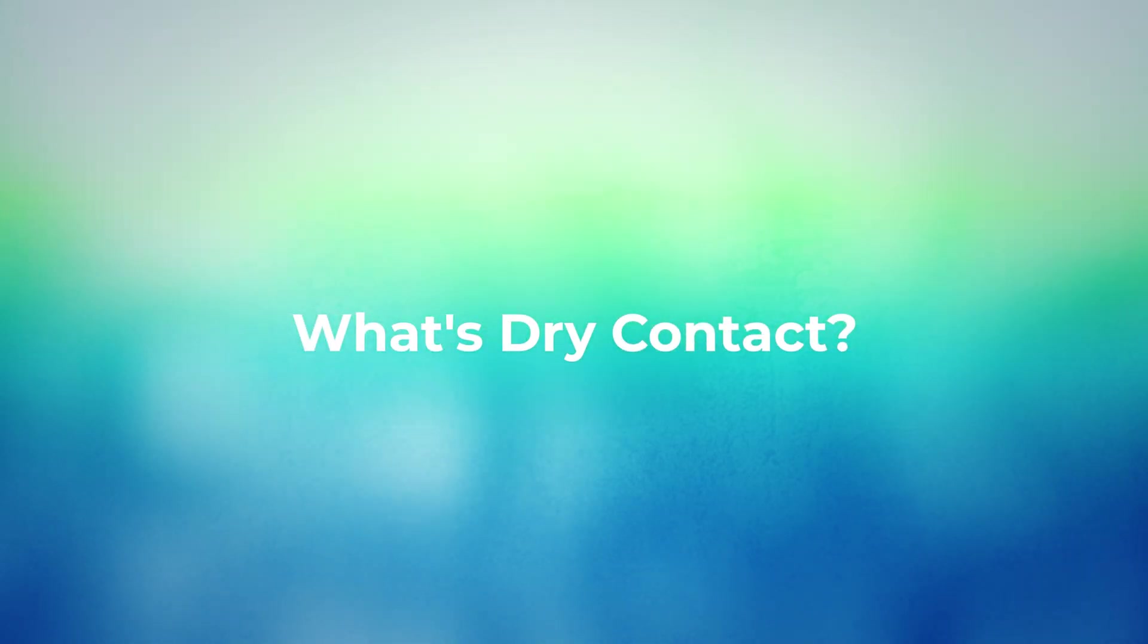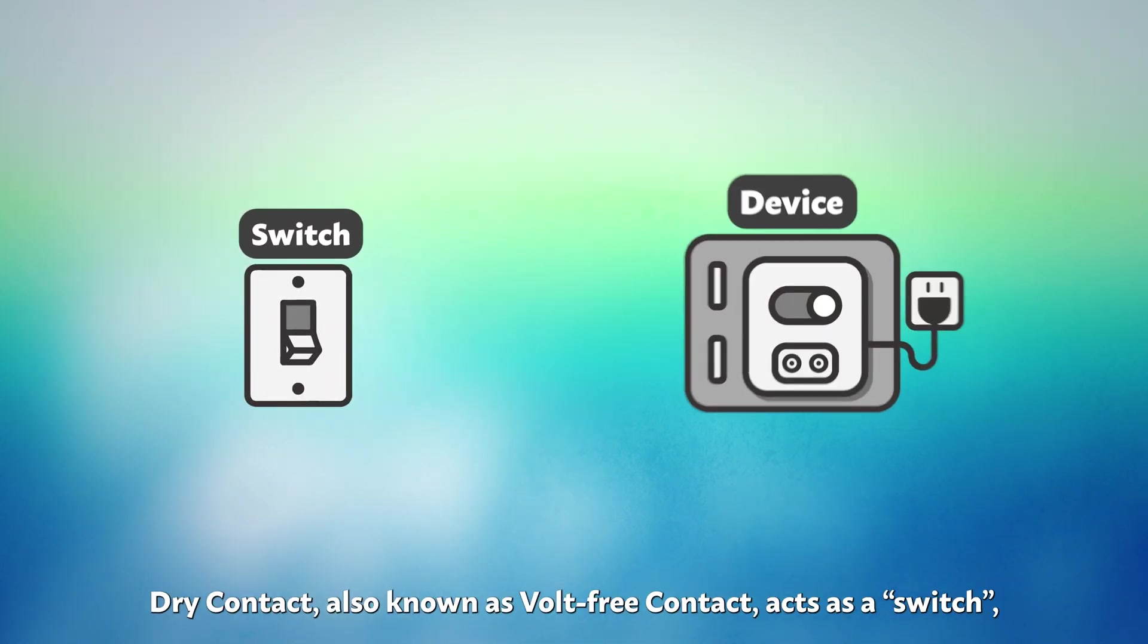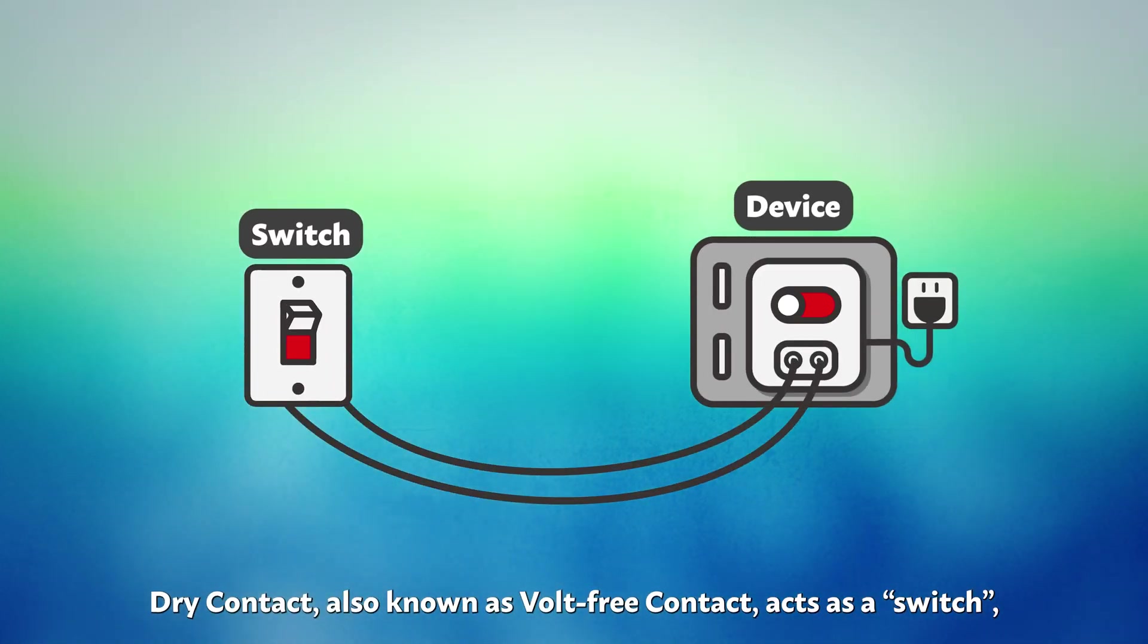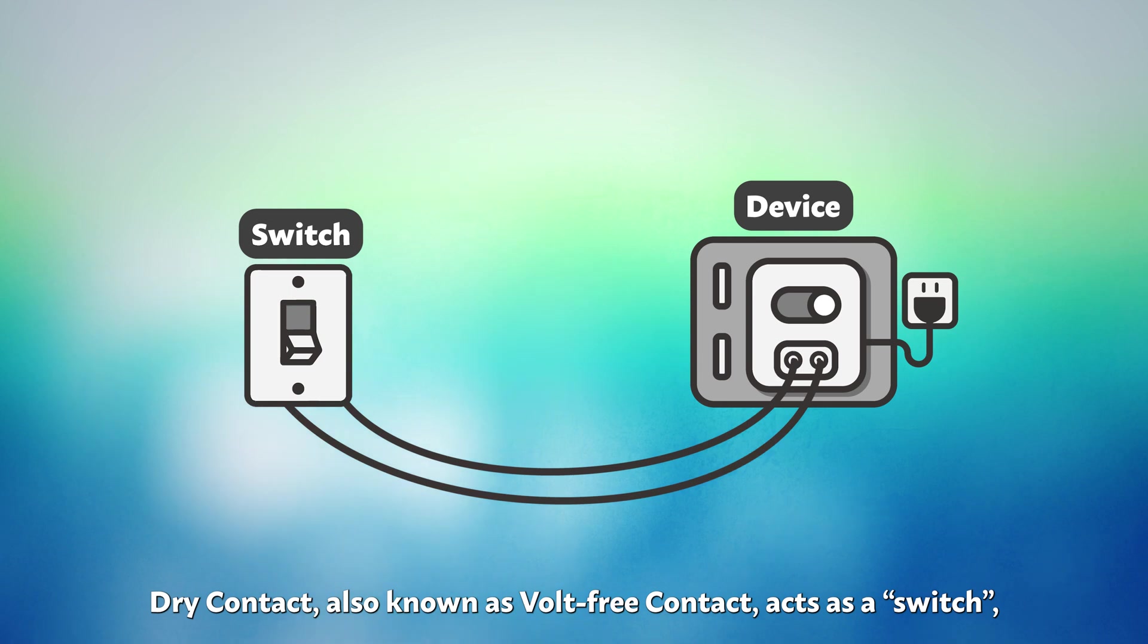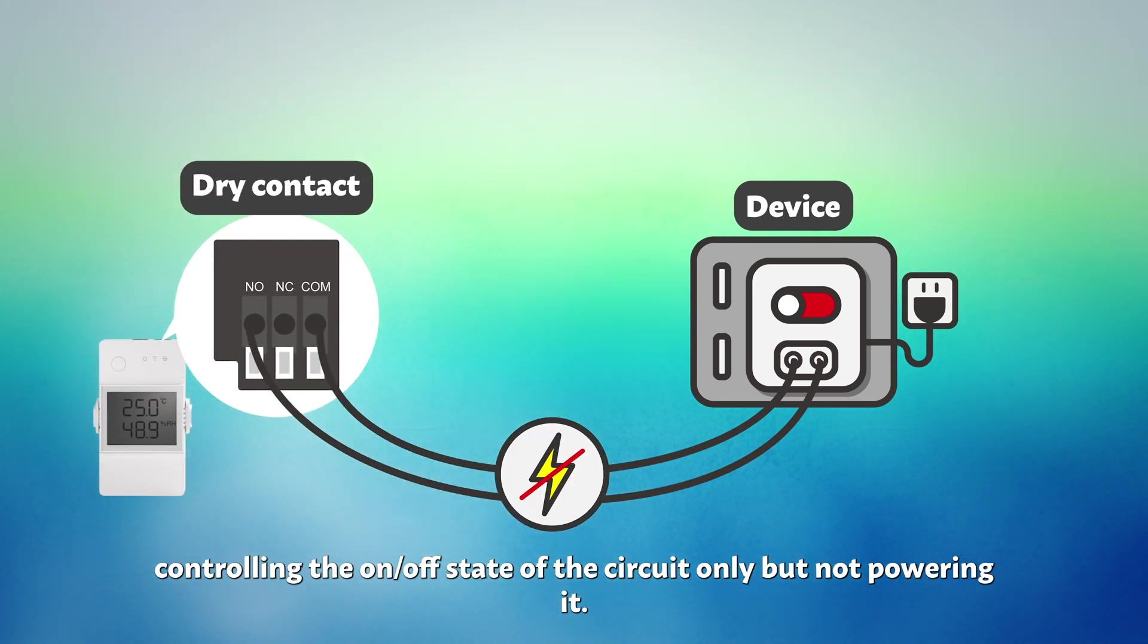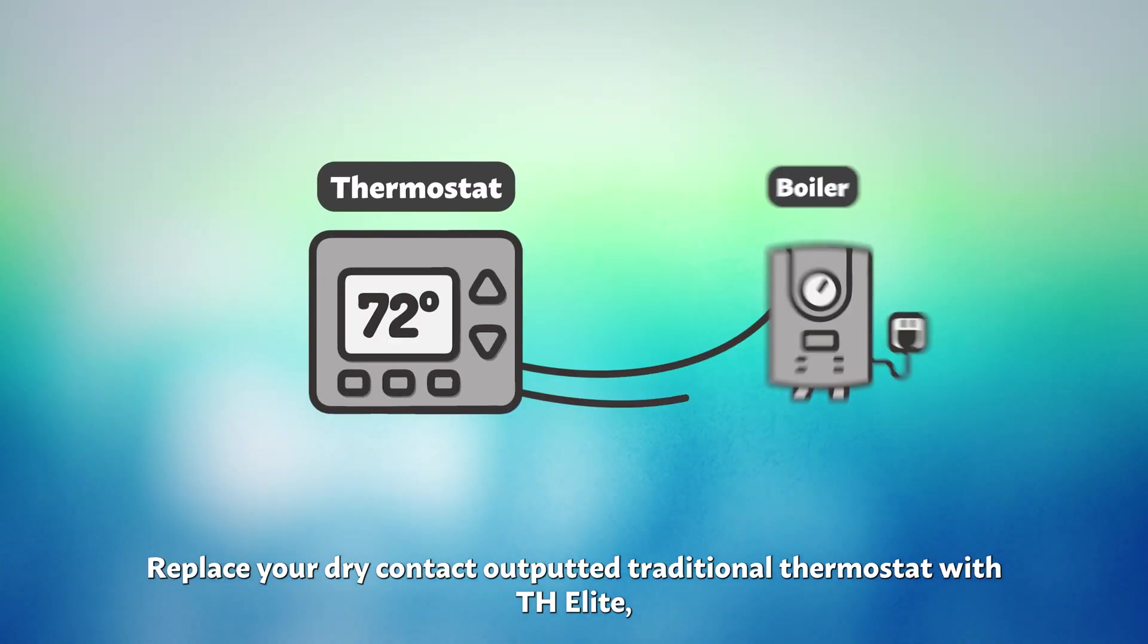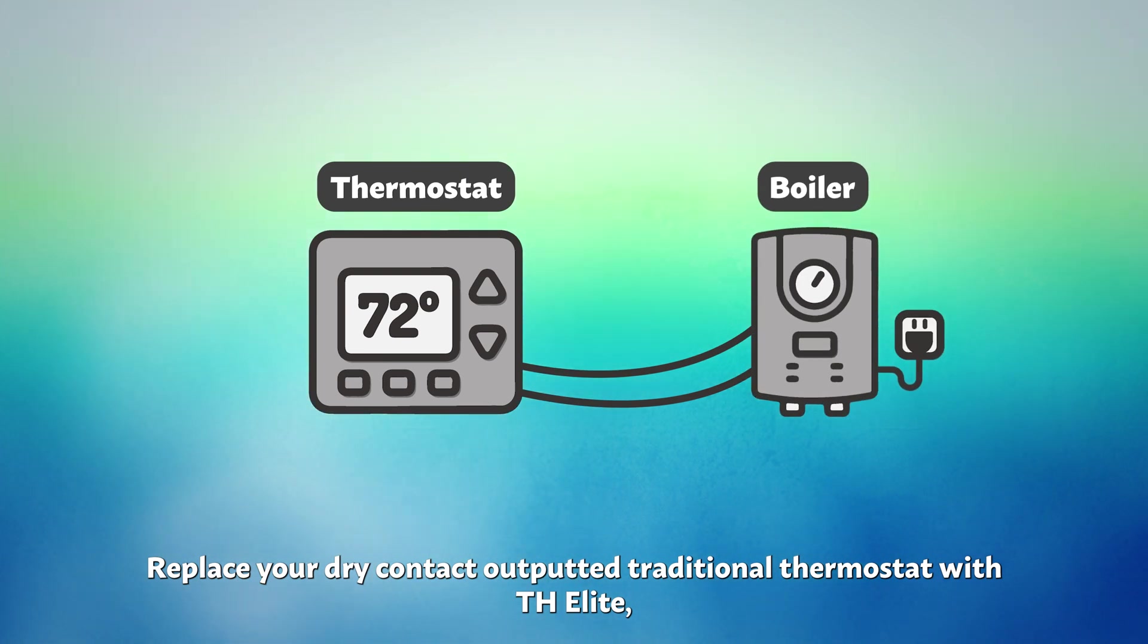What's dry contact? Dry contact, also known as volt-free contact, acts as a switch controlling the on/off state of the circuit only, but not powering it. Replace your dry contact-outputted traditional thermostat with TH Elite to control the combi boiler or any other systems controlled by an ordinary switch.